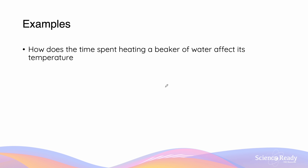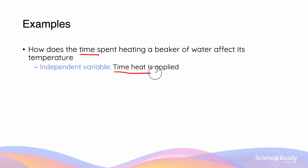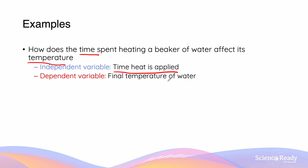Here we'll look at an example of an investigation question. Our question is: how does the time spent heating a beaker of water affect its temperature? We are investigating the effect of time spent heating the beaker of water. Since this is the variable we are going to be investigating, it is our independent variable — the time that heat is applied. The effect we are looking at is the temperature of the water, so our dependent variable is the final temperature of the water.